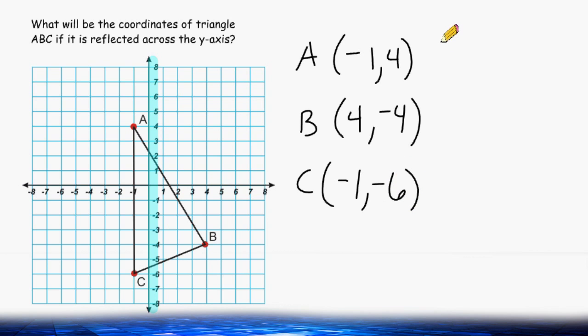Now what we are going to do is take each x value and make it opposite and make sure that the y value stays the same. And the opposite of negative 1 is positive 1. And we want to keep this y value the same, so that is going to stay at 4.